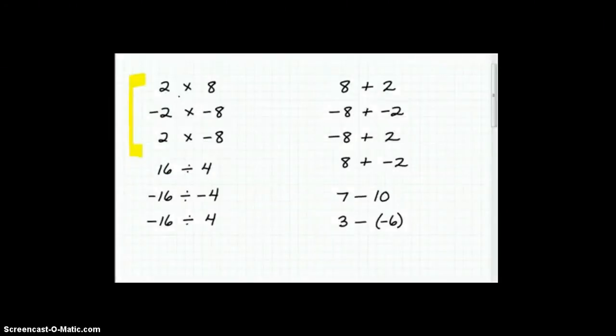So here, anytime you're multiplying two numbers where the signs are the same, in other words, a positive times a positive or a negative times a negative, the answer is always positive. So two times, positive two times positive eight, positive 16. So once again, negative two times negative eight, the signs are the same, i.e., both negative, positive answer, positive 16.